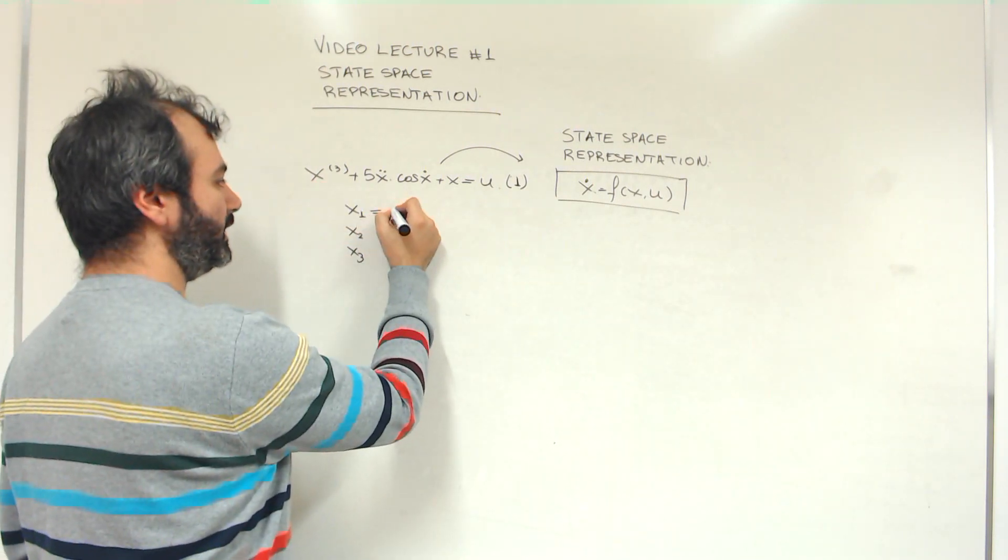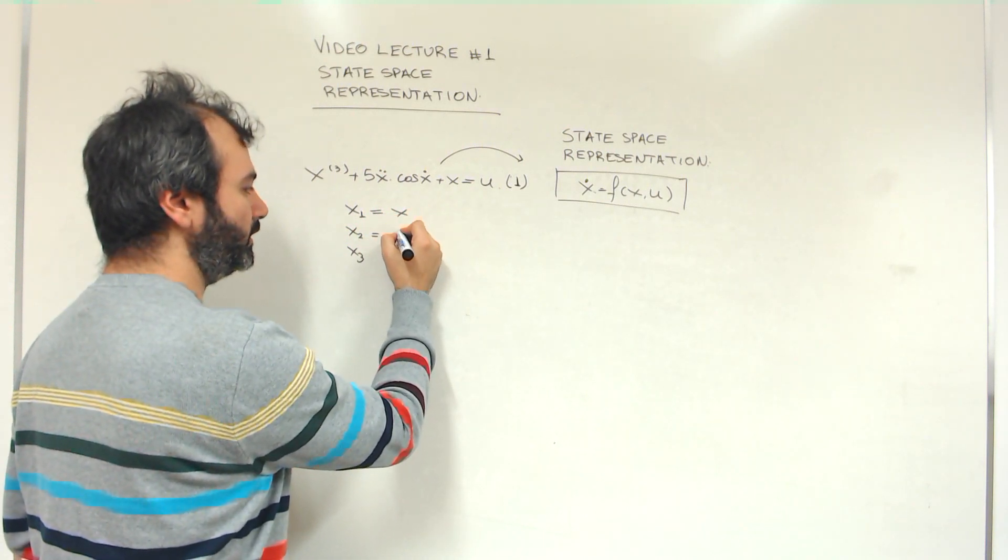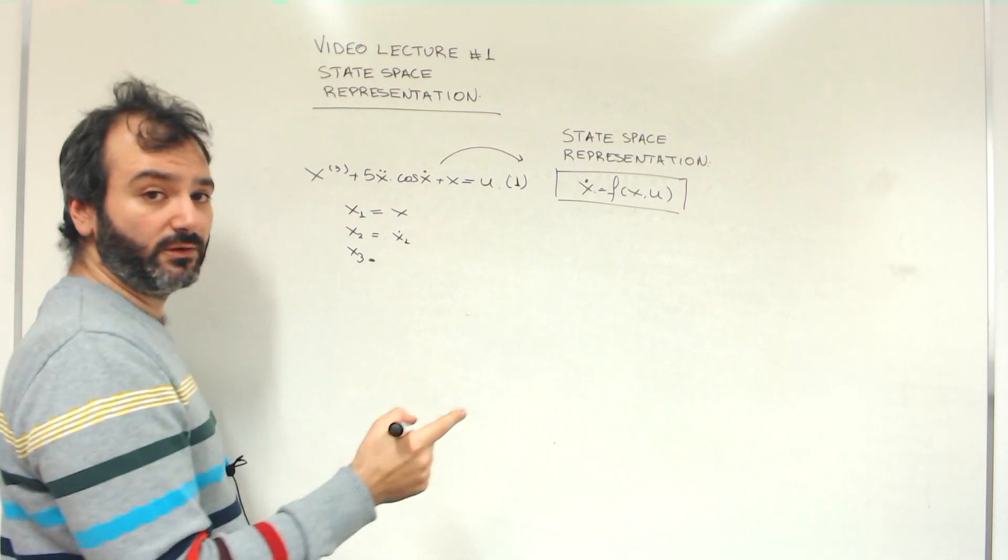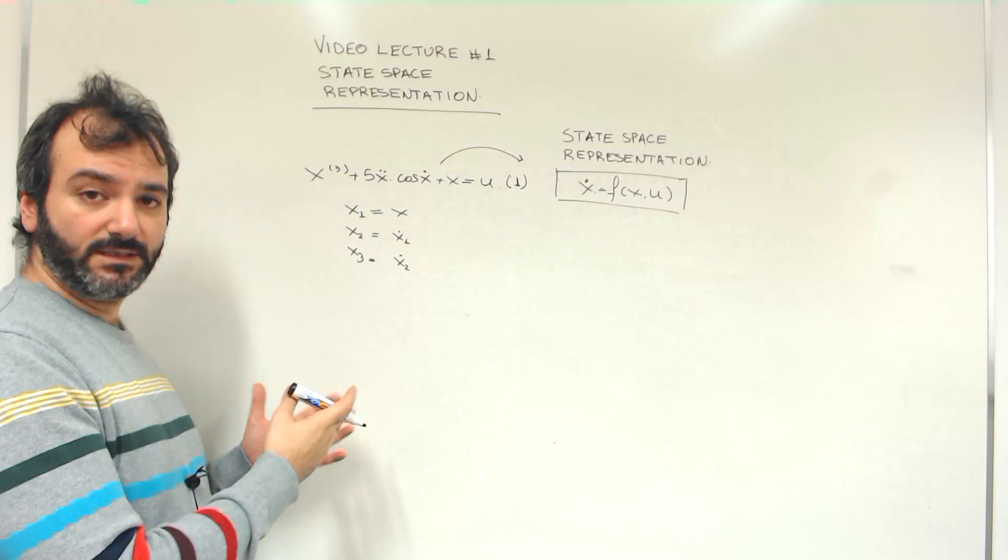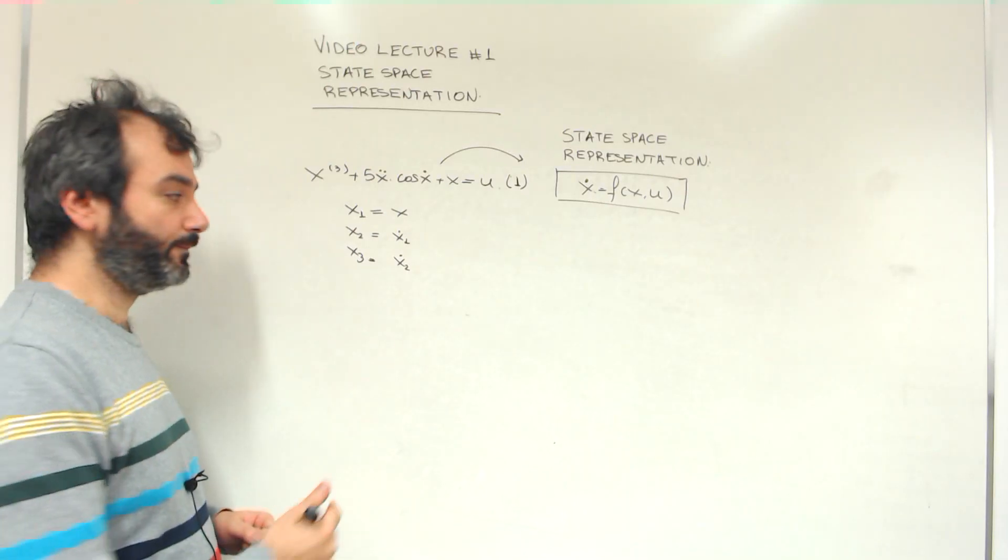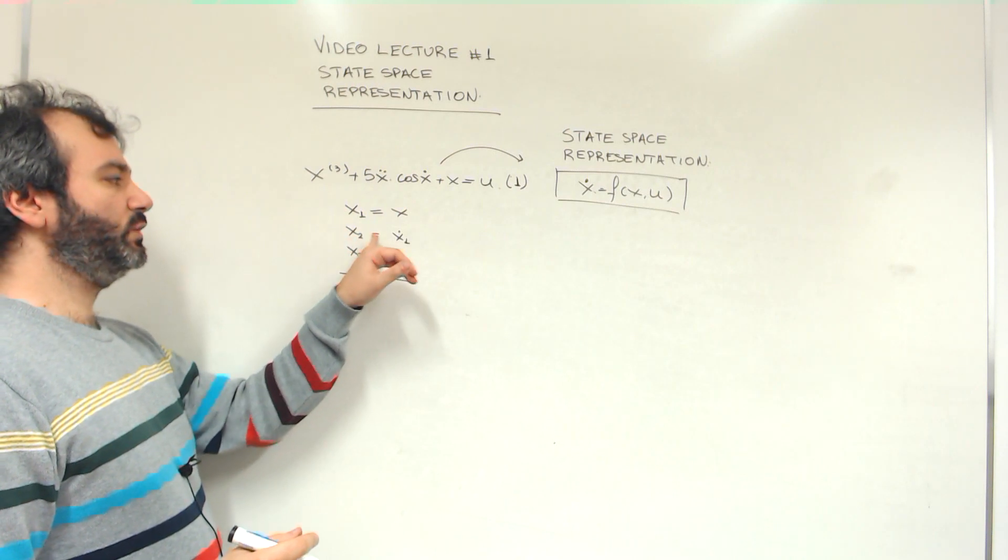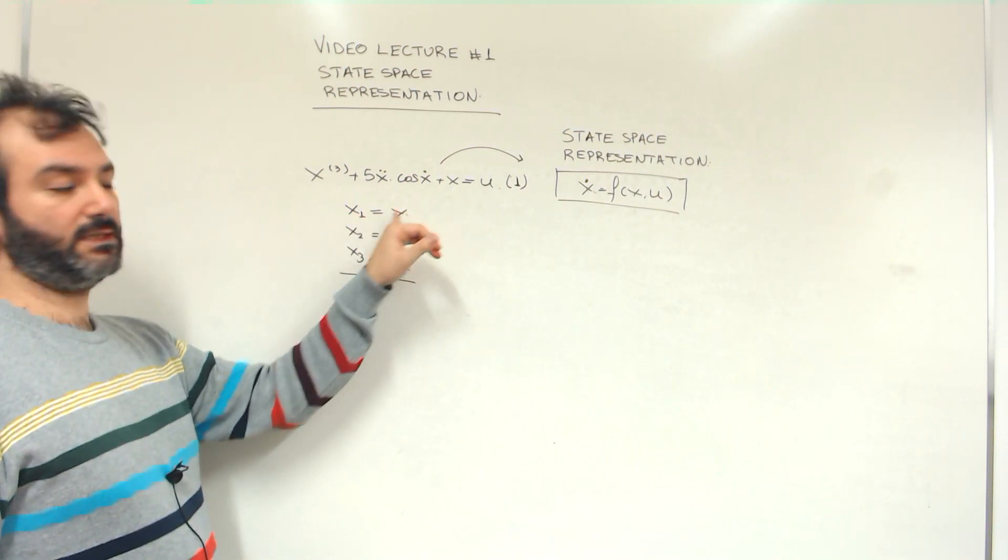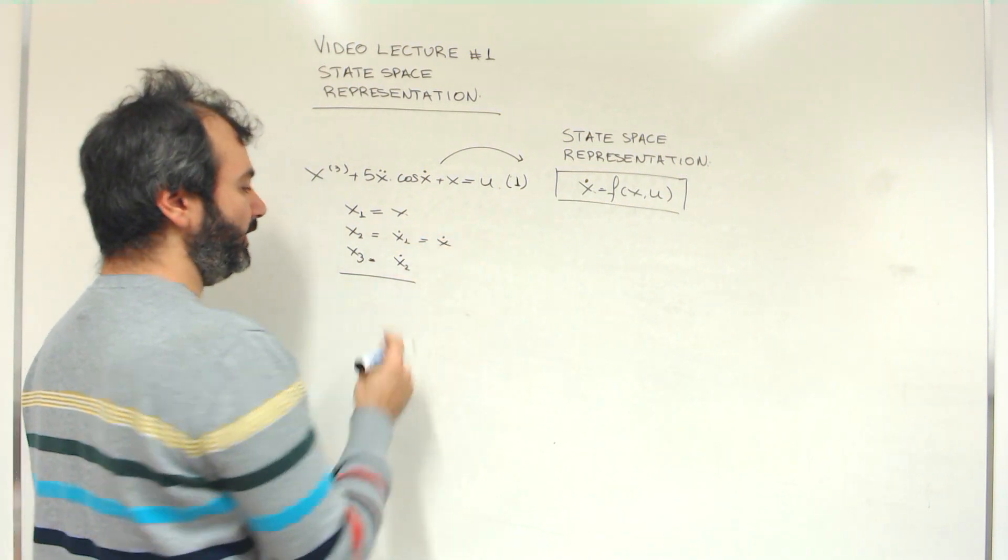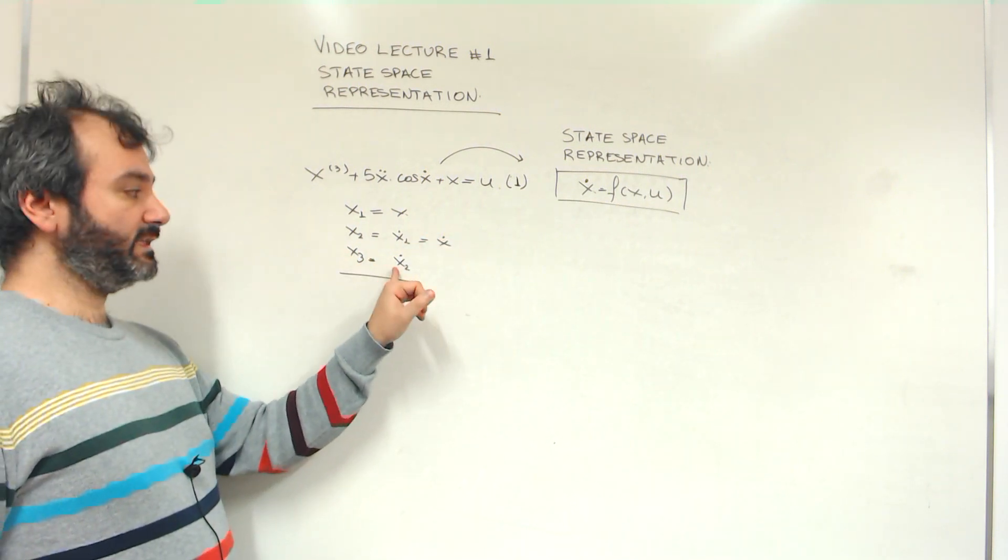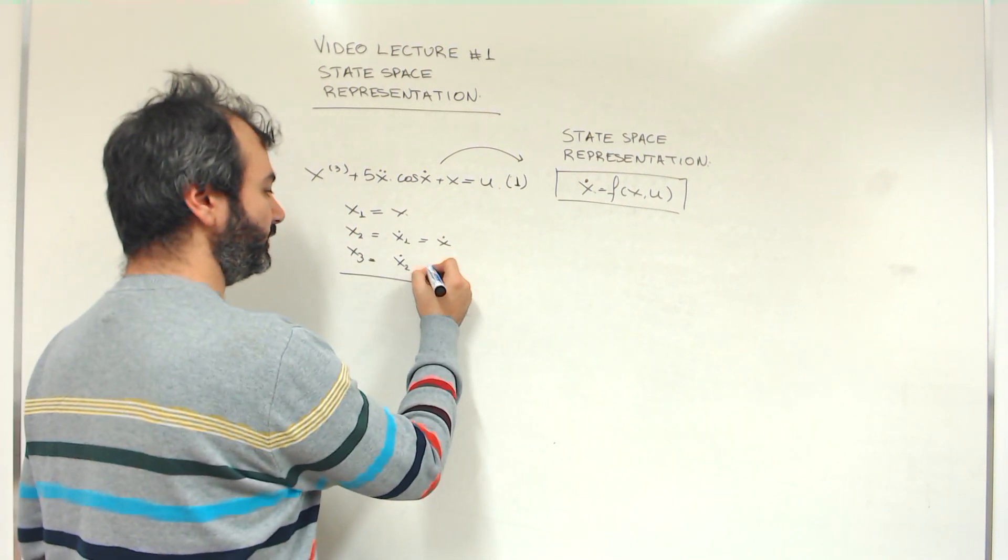x1 is equal to x, x2 is equal to x1 dot, and x3 is the derivative of the previous variable, x2 dot. This is the trick. Very simple. It suffices here to note that x2 is the derivative of x1, which is x, so x2 is the derivative of x. And then x3 is the derivative of that previous variable, so this is the second derivative of x.